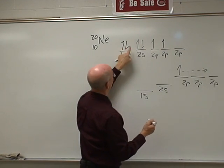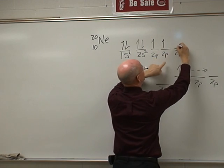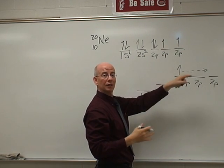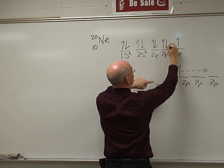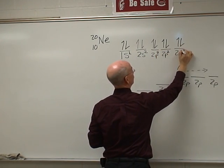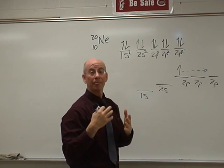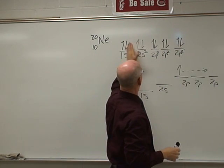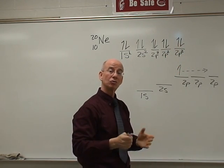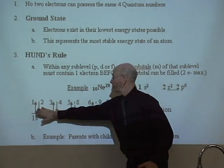So we place one electron in each of the three 2P orbitals first — that's electrons four, five, six, and seven — then we can double them up: electrons eight, nine, and ten. It doesn't matter which one you double up first; I'm just being organized and in order. That's ten electrons total. Each of the three 2P orbitals gets two electrons — two, two, and two — and now you see the electron configuration for the neon atom. It demonstrates the Pauli exclusion principle, where every electron has its own four quantum numbers, and also Hund's Rule.